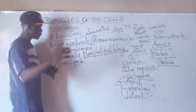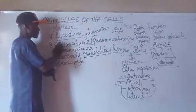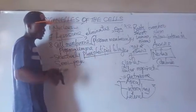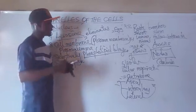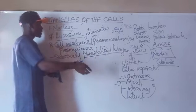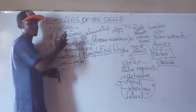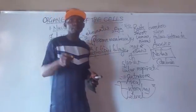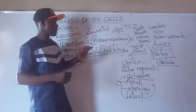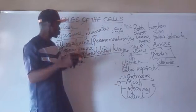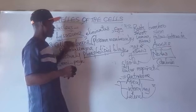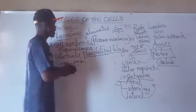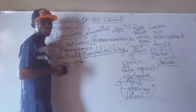It is also known as the gatekeeper of the cell. It transports materials in and out of the cell and provides protection. Note that some organisms like Paramecium caudatum and Amoeba proteus use the cell membrane for respiration — they use their body surface for respiration.